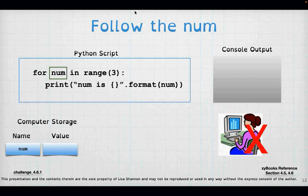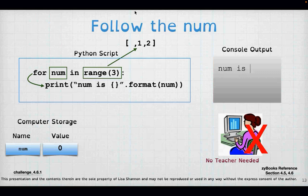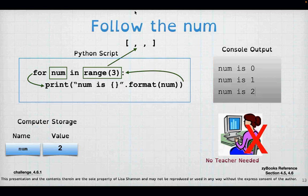Let's follow 'num' through 'for num in range(3)'. Range creates the sequence 0, 1, 2. The for loop assigns 0 to num first — I print 'num is 0'. Then I go back to the top, get 1, print 'num is 1'. Then back up, grab 2, print 'num is 2', and I'm done. There are no other checks — a for loop is very handy and has more shortcuts than a while.